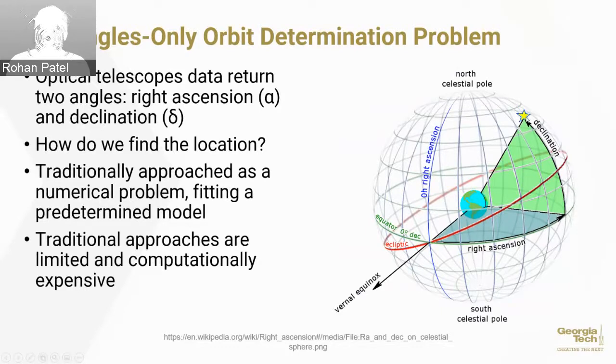But no matter how hard you try, you are not going to know how far the image is that you took away from you. It's just not possible with a single image. The problem is optical telescopes return an image, and we need to know how far away the object is. That's called the angles-only orbit determination problem.